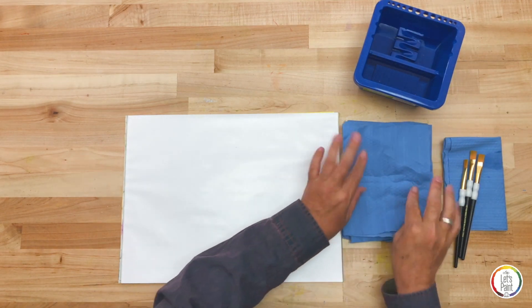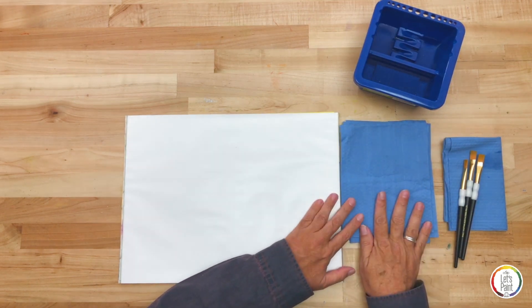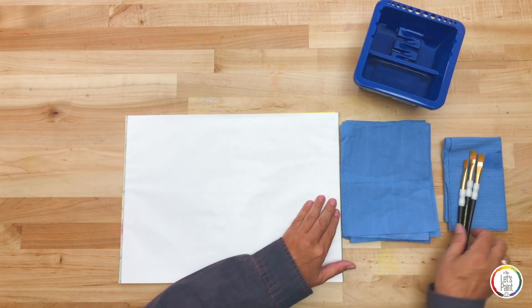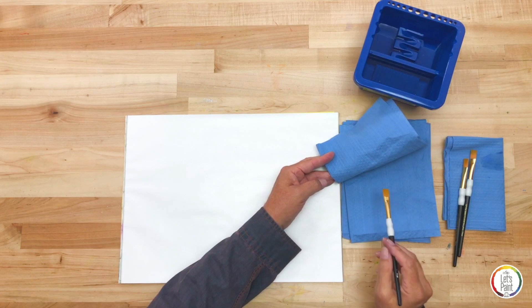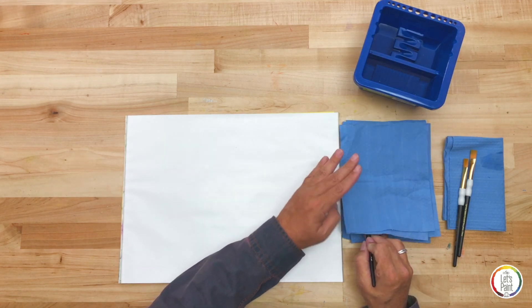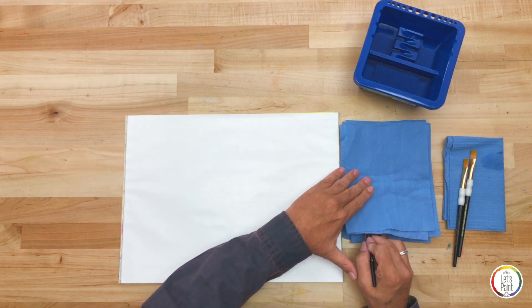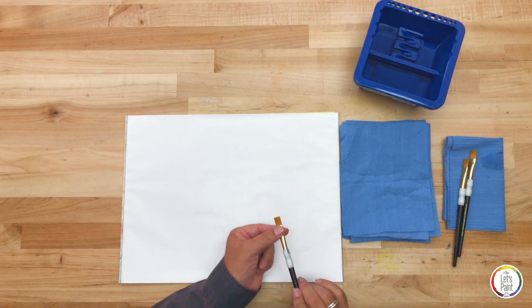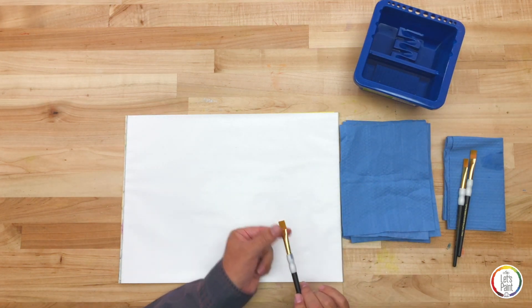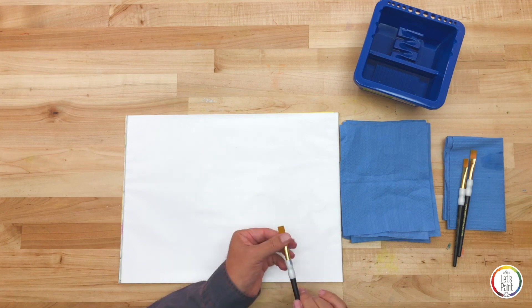But if you always have your paper towels neatly off the roll folded into quarters, when I'm painting I can pick up part of my paper towel, put my brush down, lay the paper towel back on top of it, press and pull my brush out, taking the excess paint off my brush and grooming the brush back into its good flat shape.